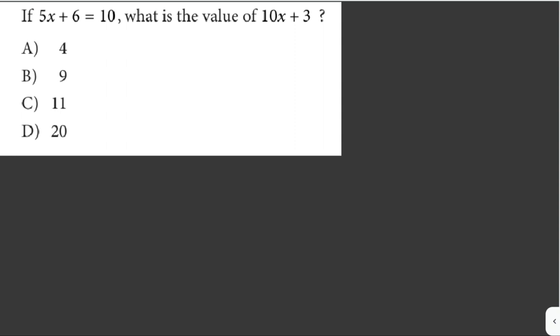So the first thing we do here is to solve for the value of x from the given equation 5x plus 6 equals 10. So that would be 5x plus 6 equals 10. Subtracting 6 from both sides, this cancels out.